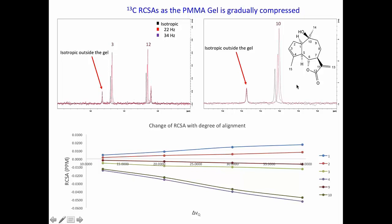But if you compress the gel, you will see that the isotropic signal almost stays. But then you see the shift, the shifts here for carbon 12, for carbon 3, for carbon 10. And then you see this shift is linear. But if you try to fit your data to those shifts in case of the compression device, you don't get a good fit.